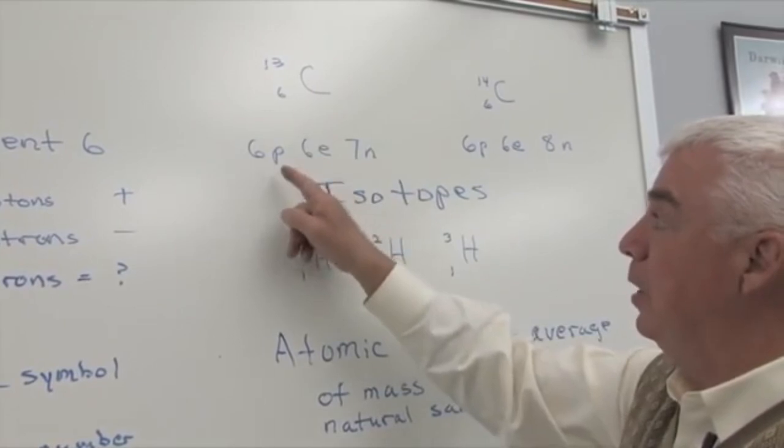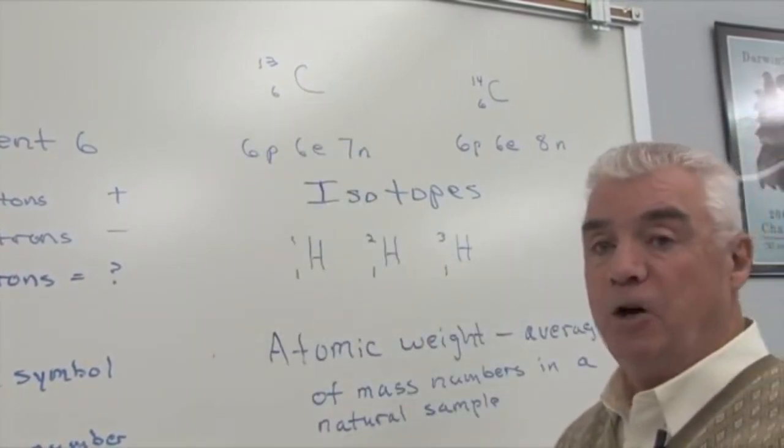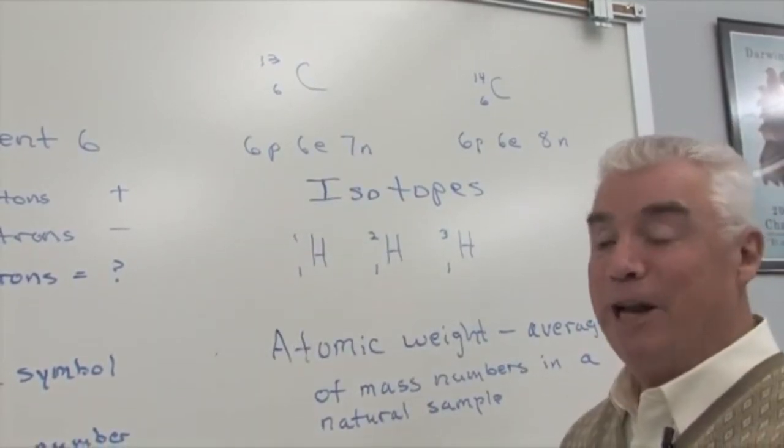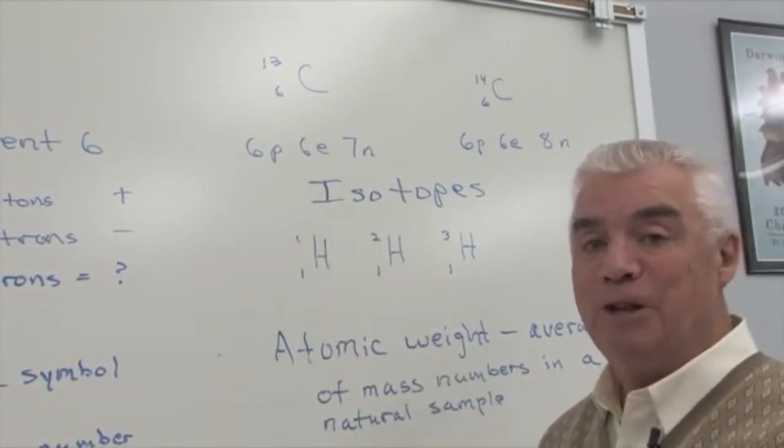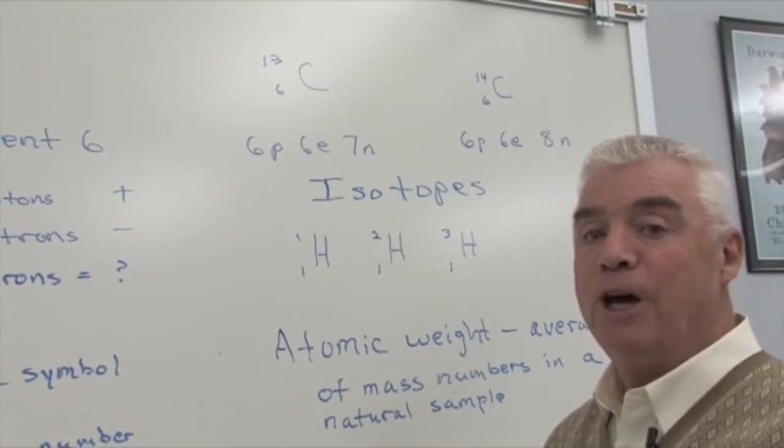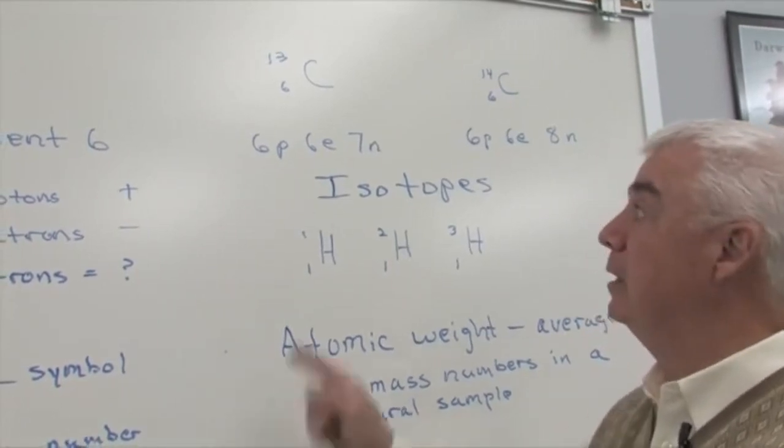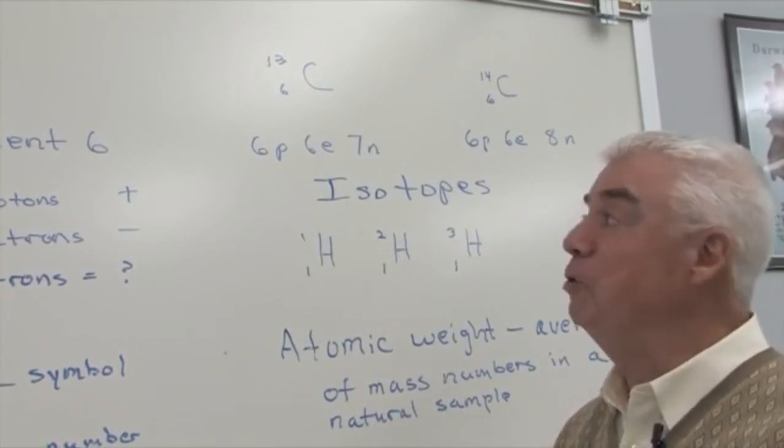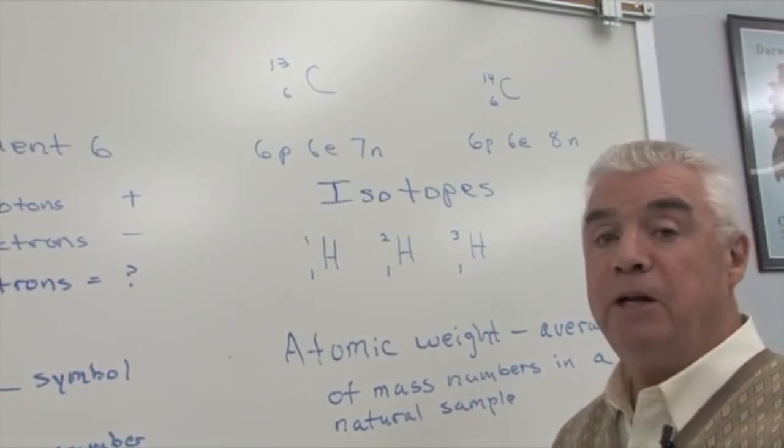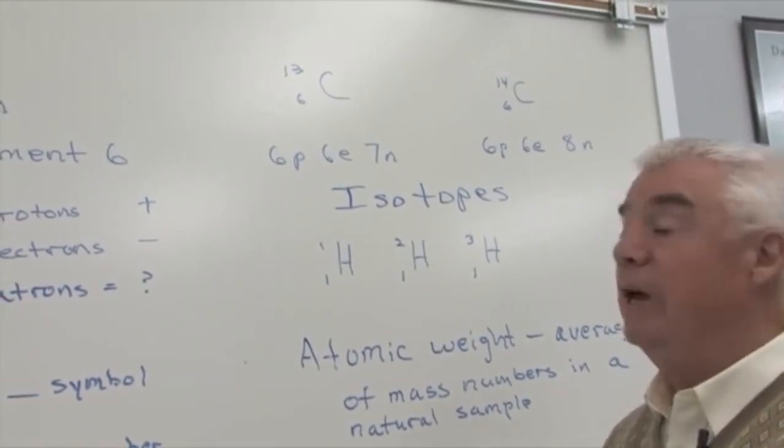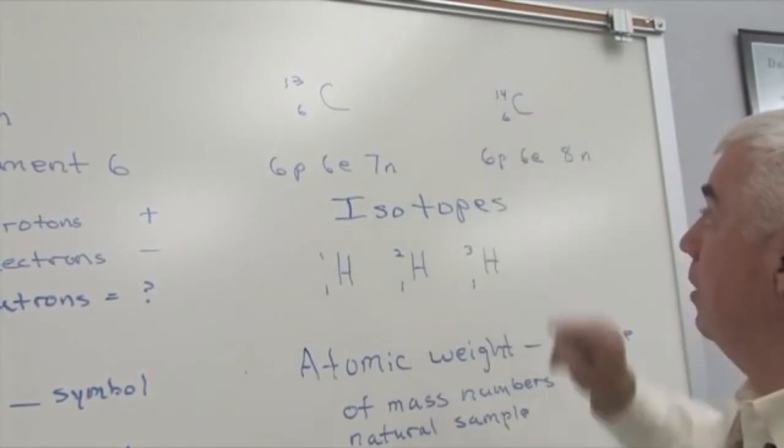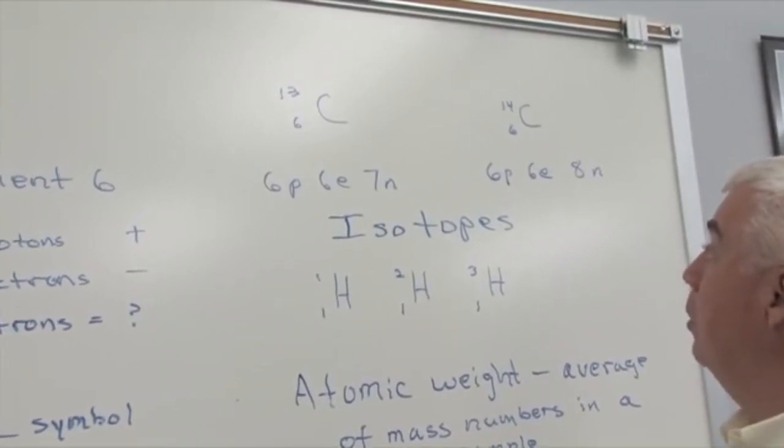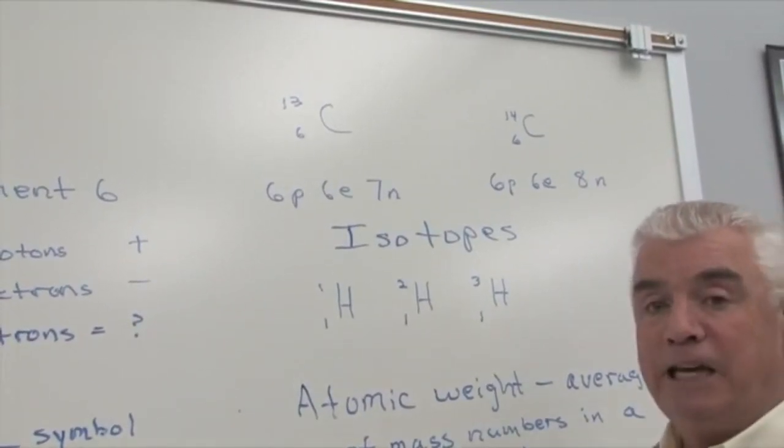In this particular one, we have six protons, six electrons. As a matter of fact, all atoms of carbon would have to have that. If it were a different sequence number, a different number of protons, it would be a different element. And the difference between these two numbers is the number of neutrons. So 13 minus six tells us that we have seven neutrons. Over here, the difference between the two, the lowercase number and uppercase number is eight. We have eight neutrons.